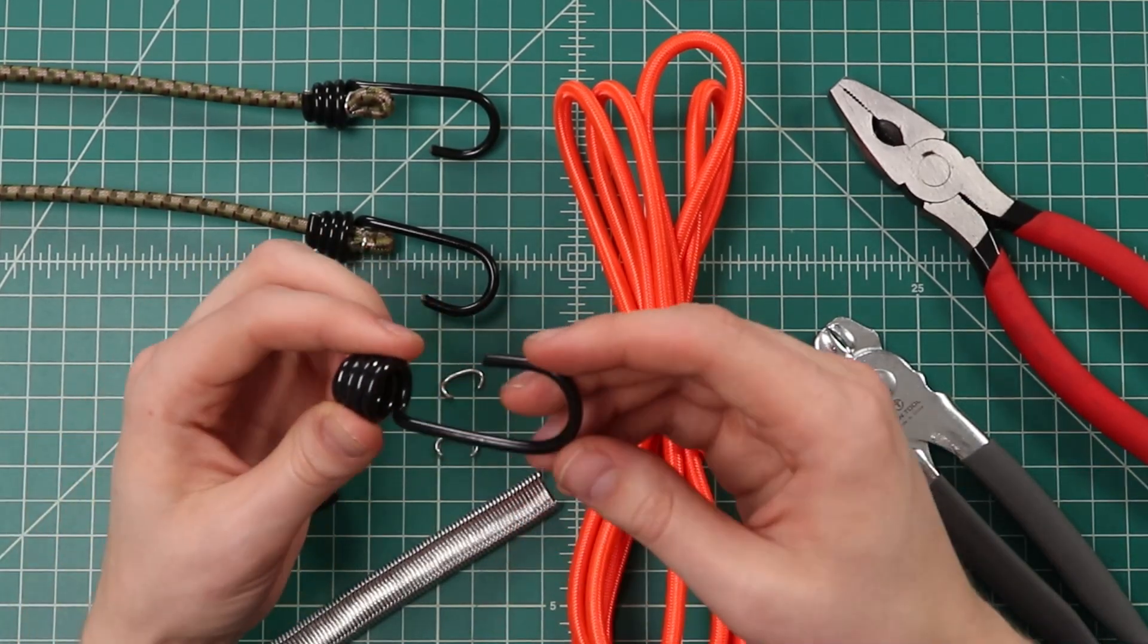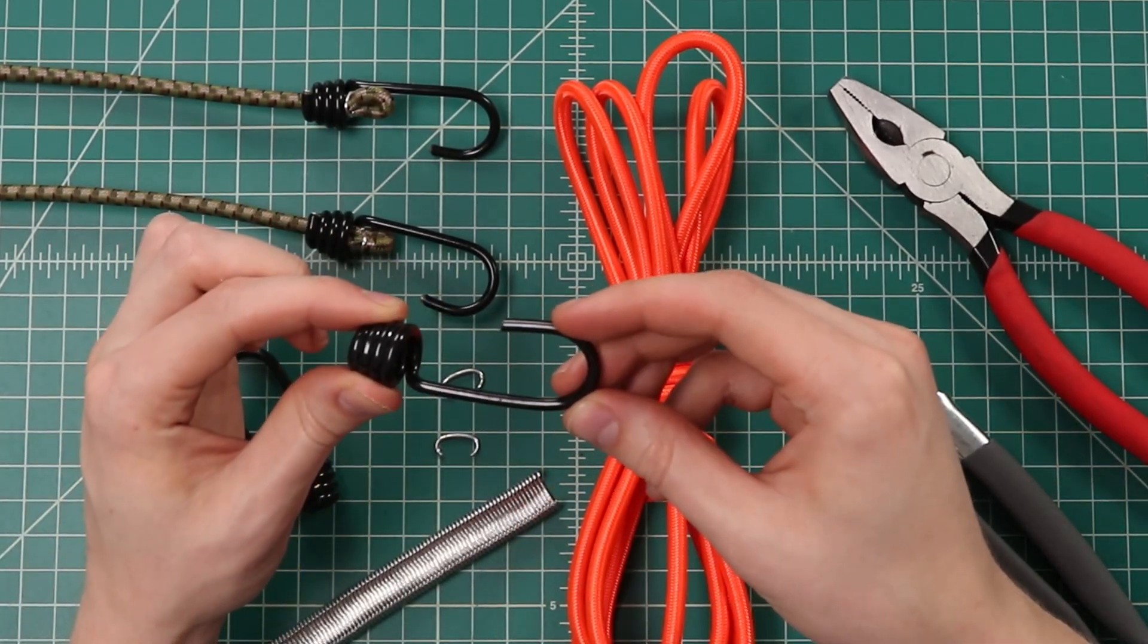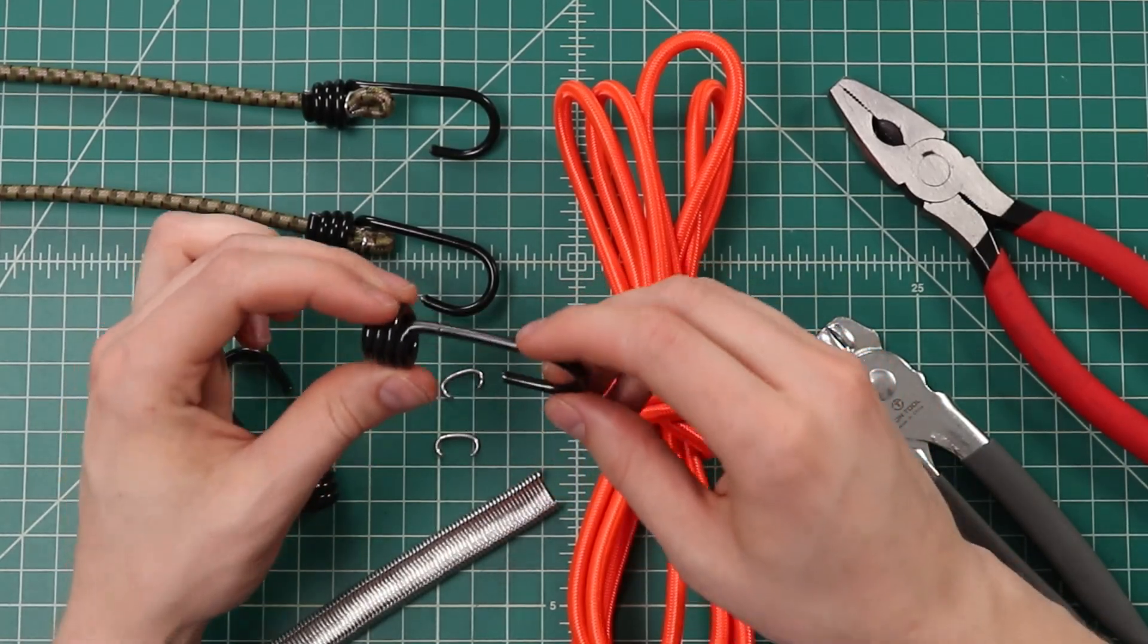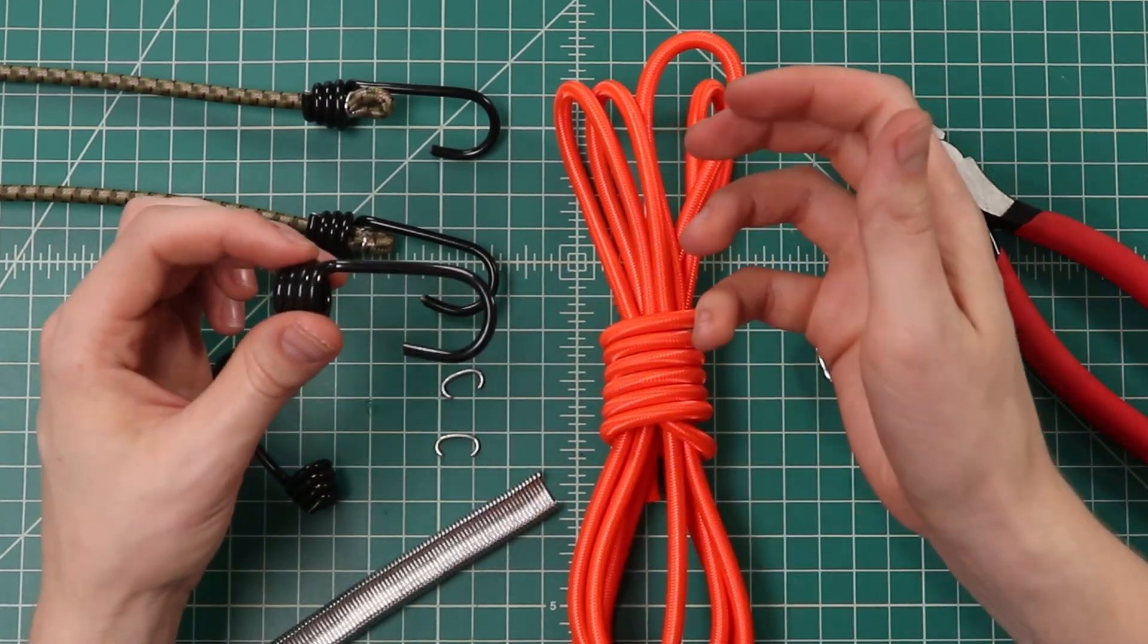In this video we're going to be showing you how to put these metal hooks on the end of bungee cords. That's what you're going to see most in the stores, but we do have a lot of plastic options for various uses in our store, and we'll show those at the end of the video.